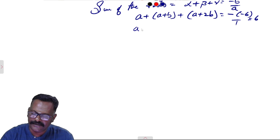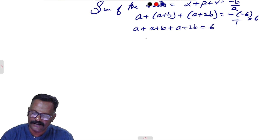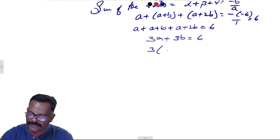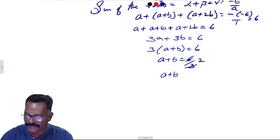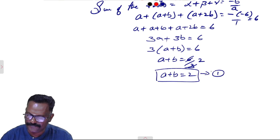That gives 3a plus 3b equals 6, so a plus b equals 6 divided by 3, which equals 2. Therefore a plus b equals 2. This is Equation 1.